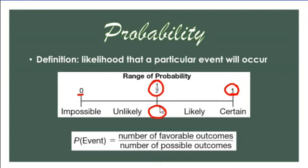How do we determine what probability is? We use the formula: favorable outcomes over total possible outcomes. So if they're flipping a coin, the event would be, let's say, heads. How many heads are on a coin? One. Out of how many possible outcomes — total sides of a coin? Two. So the probability of landing on heads is one out of two, or 50%.